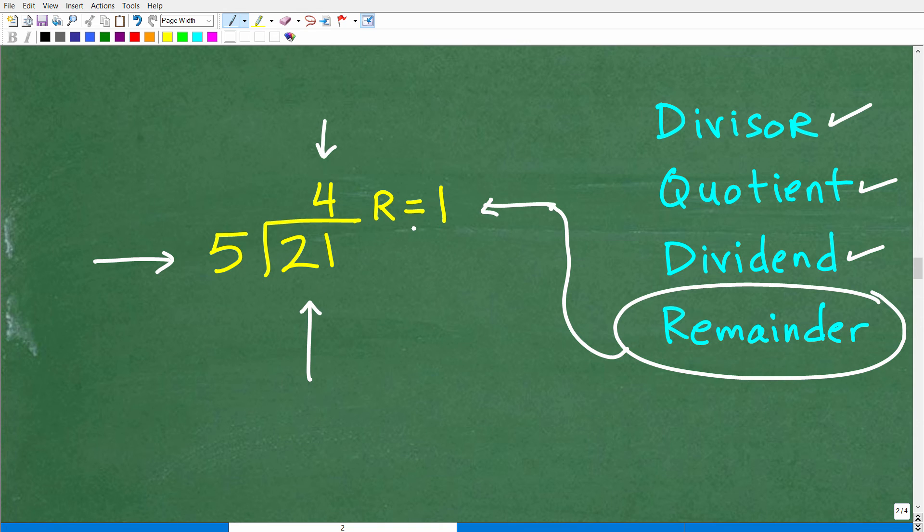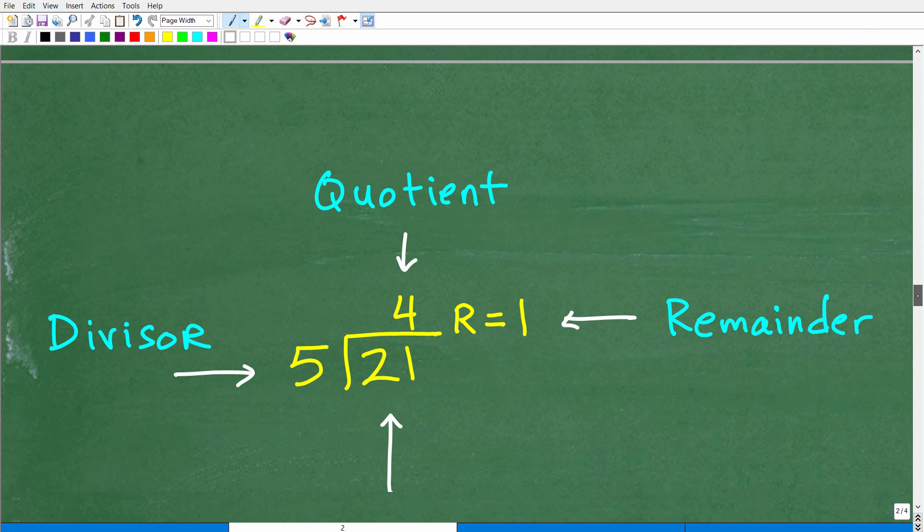You can write this as a fraction like 4 and 1/5. You can do that as well. So again, I just want you to get really familiar with the terminology when it comes to division because sometimes when you divide, you're not going to just have a nice, lovely quotient. Sometimes you have a quotient and a remainder. In this case, what's our quotient? Our quotient is going to be our answer, right? So I want you to think about these other terms because the remainder is clearly this guy right here. We have remainder equals 1.